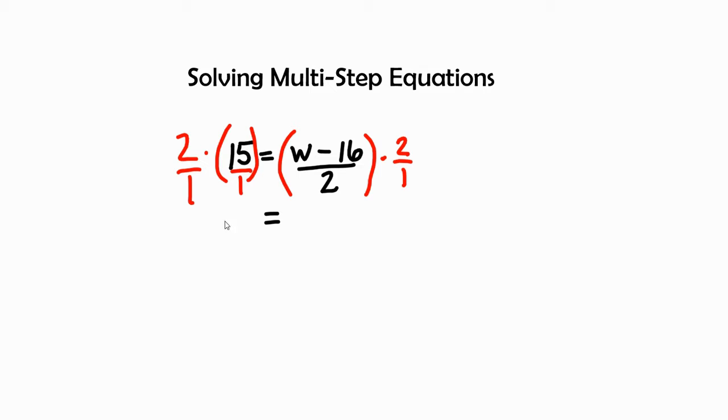First of all, 2 times 15 is 30, and I'm going to use the distributive property to each term inside these parentheses. So 2 times w is 2w over 2, and then 2 times negative 16.